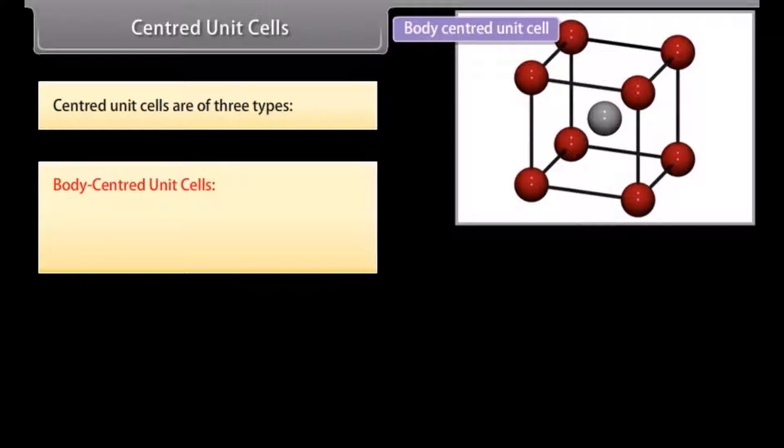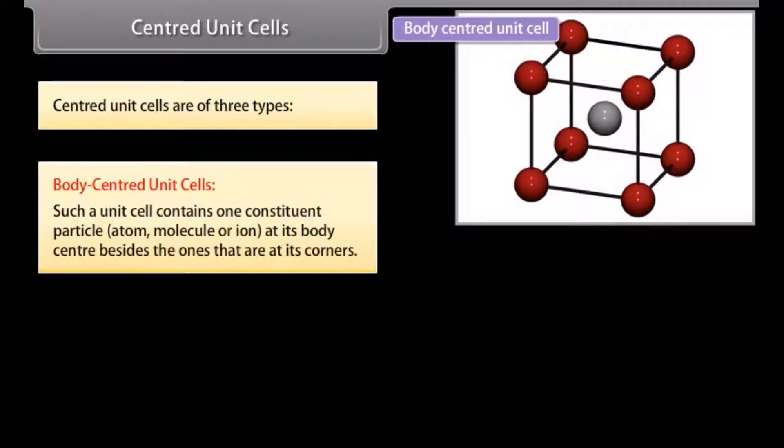Centered unit cells are of three types. 1. Body centered unit cells: such a unit cell contains one constituent particle, atom, molecule, or ion at its body center besides the ones that are at its corners.